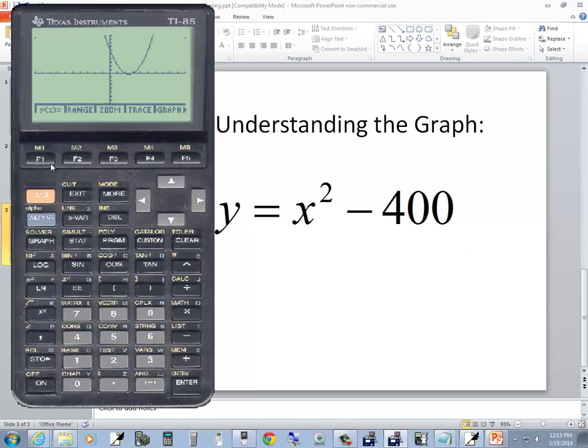So press graph, I'm going to my F1 for the Y equals, press clear, clear that out, do my X bar, and then I'll push my X squared, minus 400. And I'm going to do an exit to bring this menu down. You don't have to, you could have done second F5, but graph, the button right below it is F5.